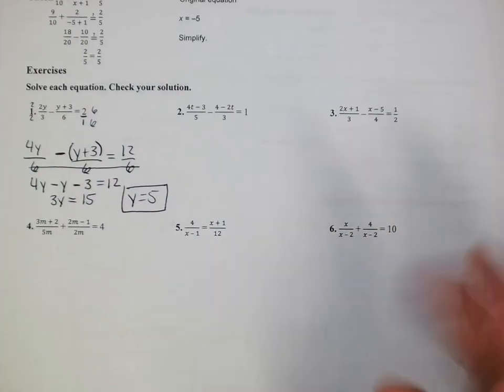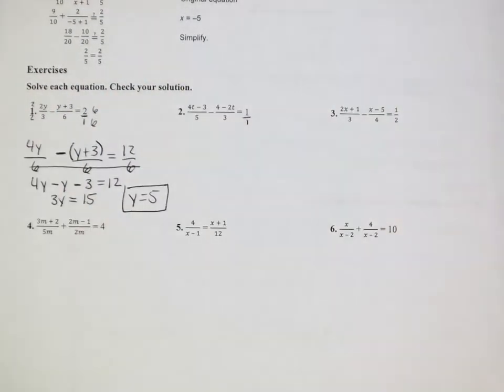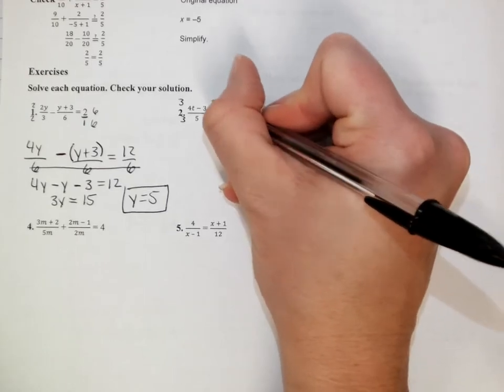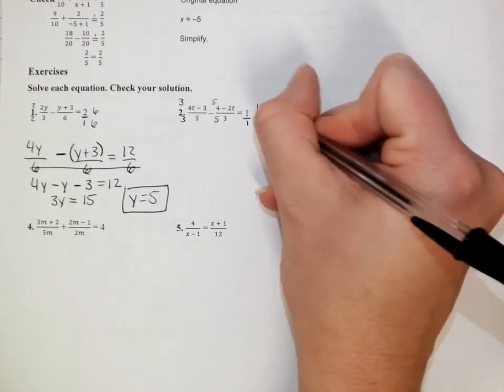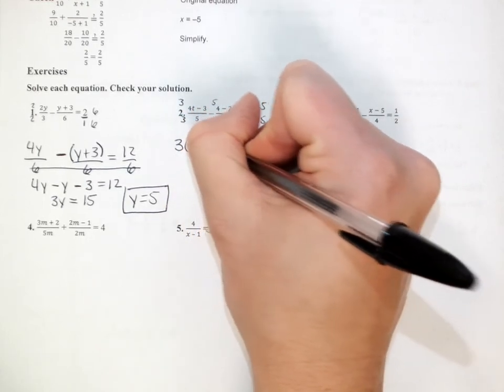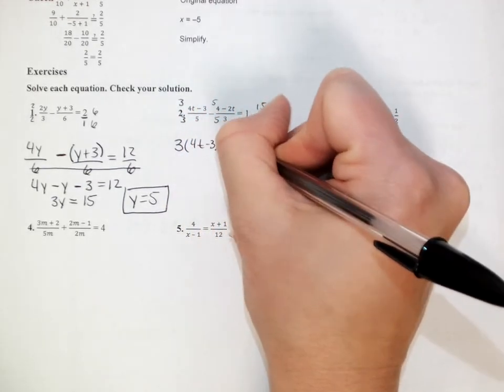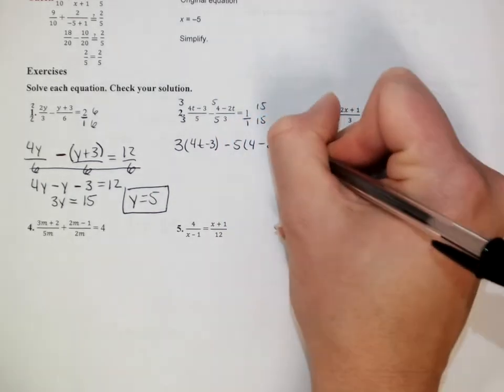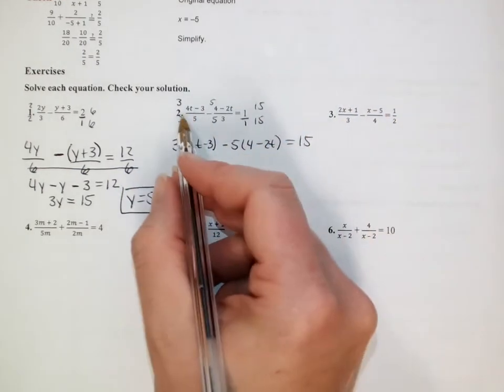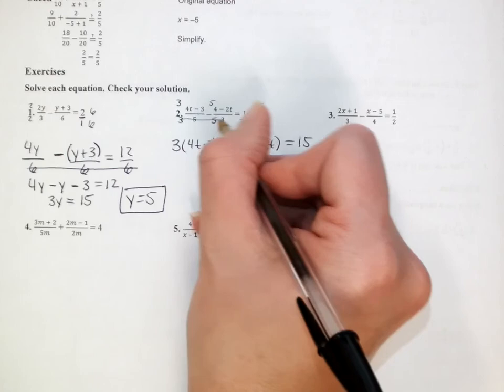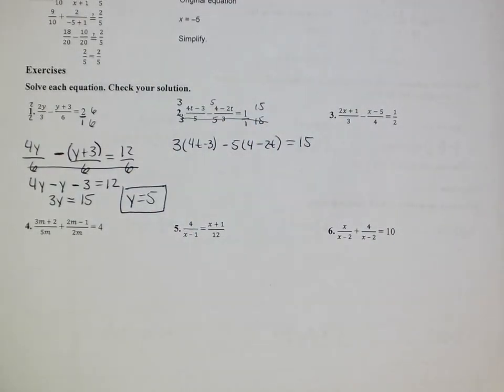Pretty similar on the next one. Again, this is currently over 1. The only way to make those the same is to turn them all into 15s. So I'm going to multiply the top of this one by 3, this one by 5, this one by 15. Again, that makes 3 times 4t minus 3 minus 5 times 4 minus 2t equals 15. Again, I know all my denominators are 15 at that point. I've just intentionally made them that. I'm going to go ahead and ignore them right there to save some room.